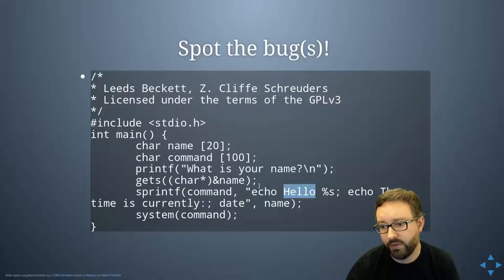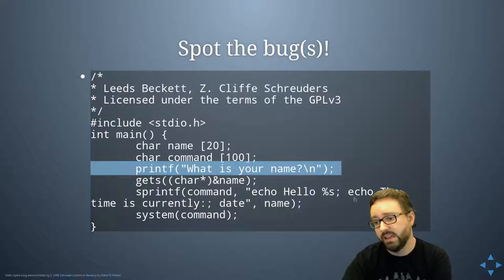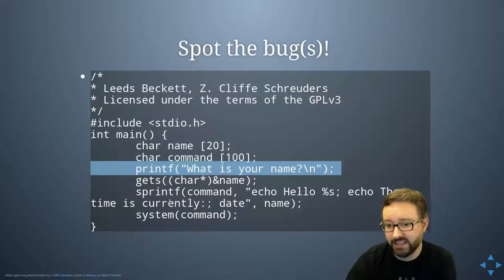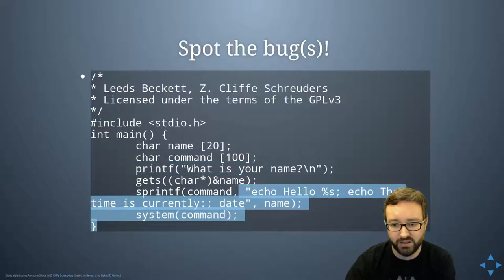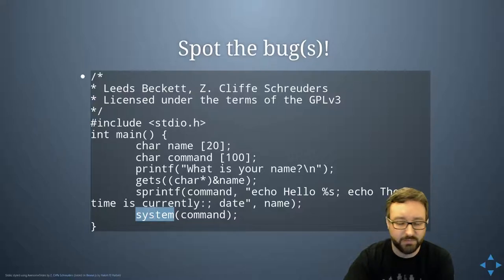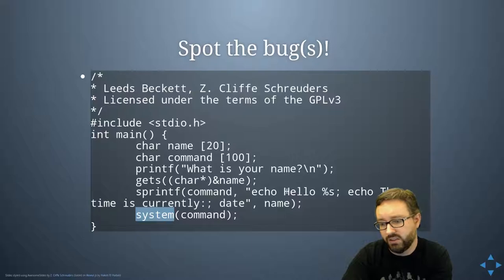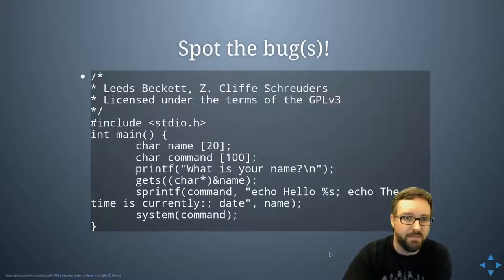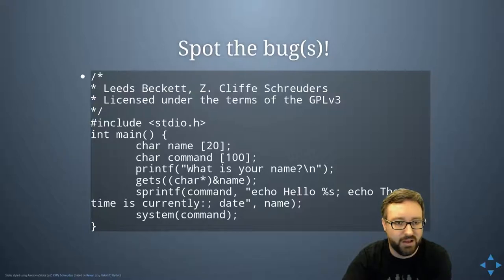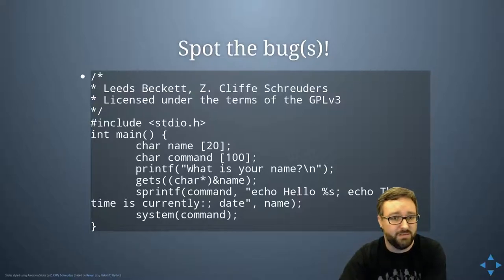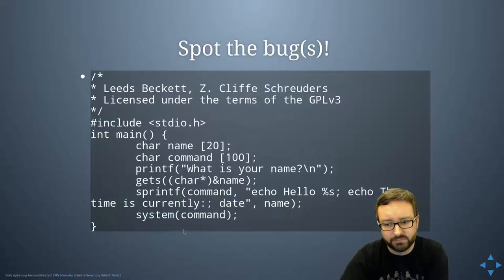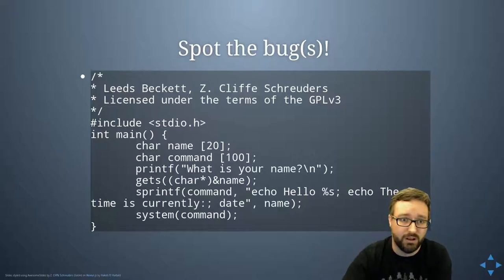However, if instead of typing their name, the user types bash commands, the program will literally send that whole string to bash — because the system() call runs in the shell. So this is really bad. I could just put a semicolon, which gives me a new command, and then 'rm' to delete a file, or 'cat' the password file, or cat some secret file — basically it would run whatever code they enter. This is obviously a bad thing and a good example of this kind of vulnerability.